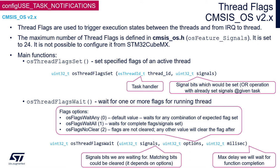There is a dedicated function called osThreadFlagsClear. Using this function, it accepts only one argument: the mask of flags which need to be cleared within the task control block of the task from where we are calling this function.